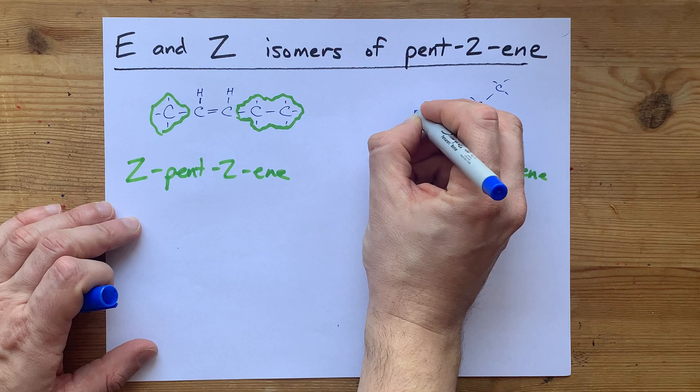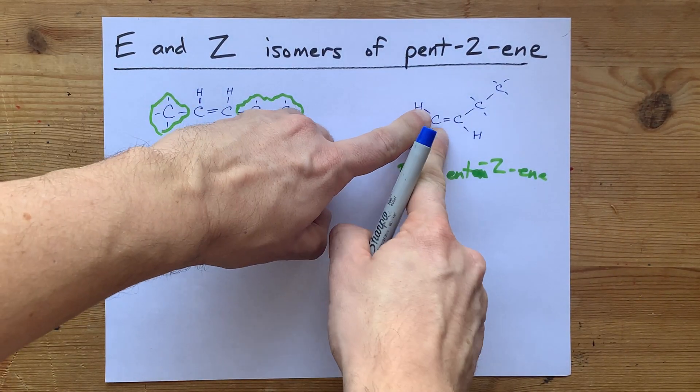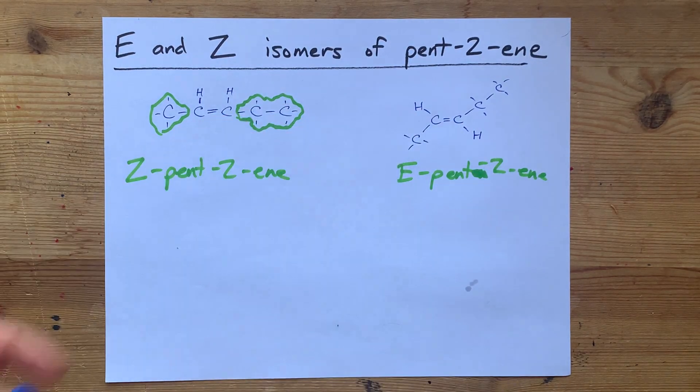Again, you'll note that you could have called this the trans isomer. But that's only allowed because you have Hs on opposite sides there.